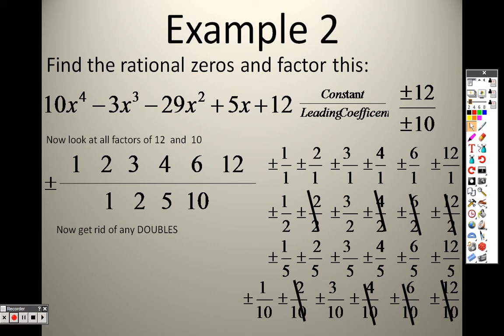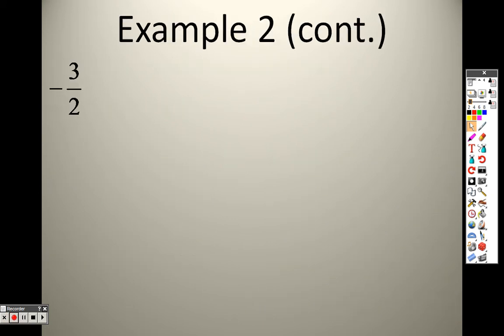Continuing 6.6 here, the rational zeros and finding all the rational zeros, we are now on Example 2. And with Example 2, we figured out that there are 32 different choices that I have to look at here. So it could take a long time to use the synthetic division to check all these out. So here's what I'm going to do.